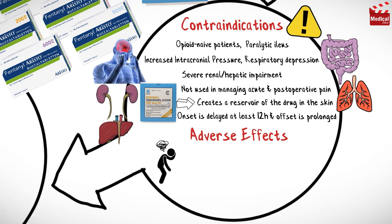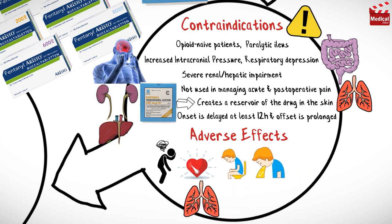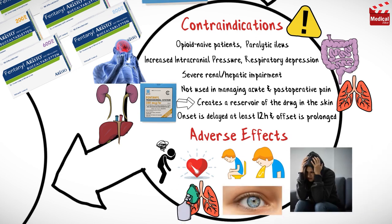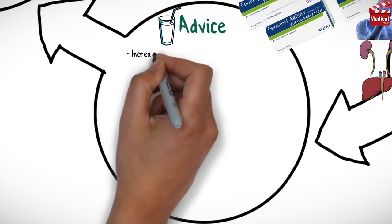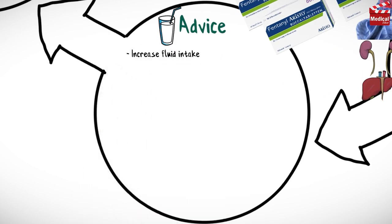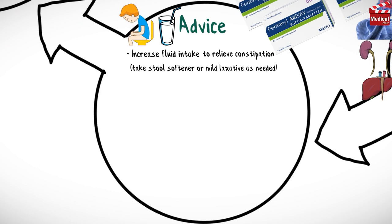Adverse effects of fentanyl include sedation and dizziness, decreased blood pressure and heart rate, constipation, nausea, vomiting, respiratory depression, and miosis. It may also cause dependence. Advise patients to increase fluid intake to relieve constipation and to take a stool softener or mild laxative as needed.